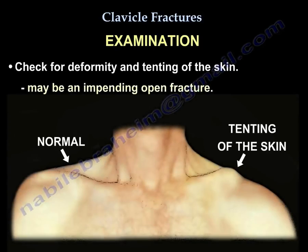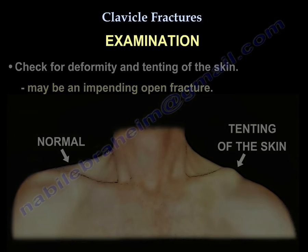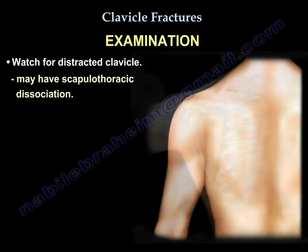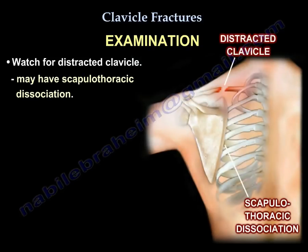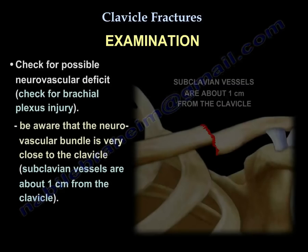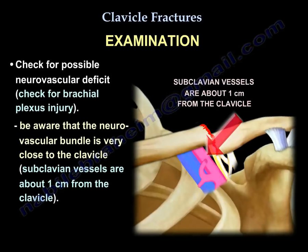On examination of the patient, check for deformity and for tenting of the skin, as it may indicate an impending open fracture. Watch for a distracted clavicle — you may have a scapulothoracic dissociation. Check for neurovascular deficit and examine for brachial plexus injury. Be aware that the neurovascular bundle is very close to the clavicle; the subclavian artery is about one centimeter from the clavicle.